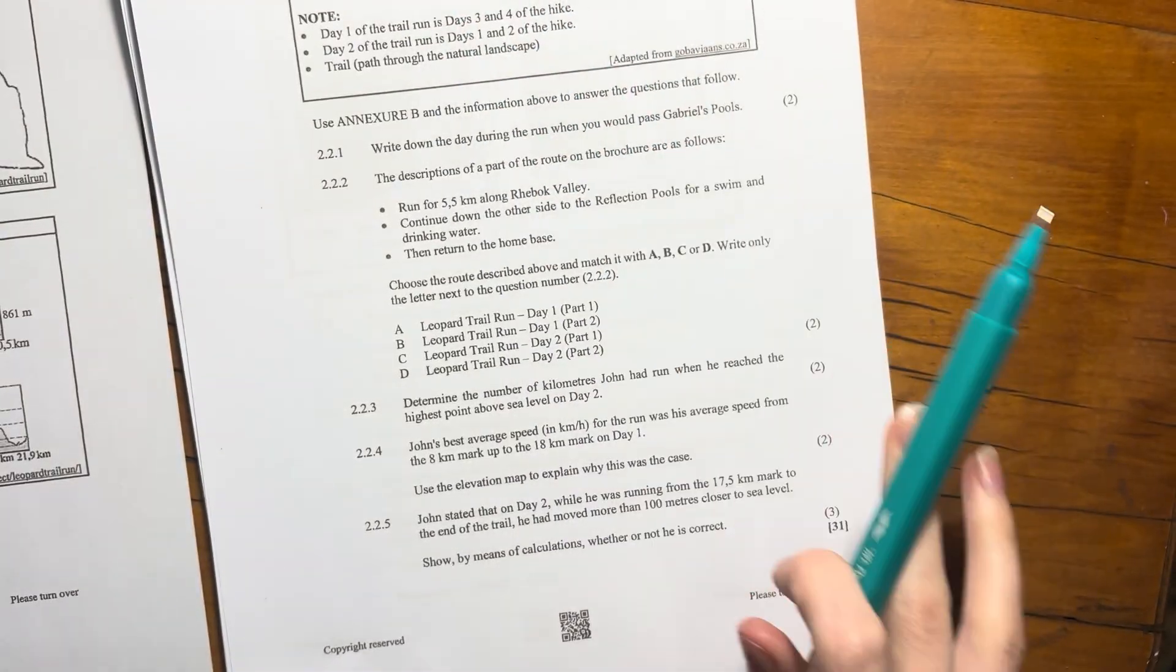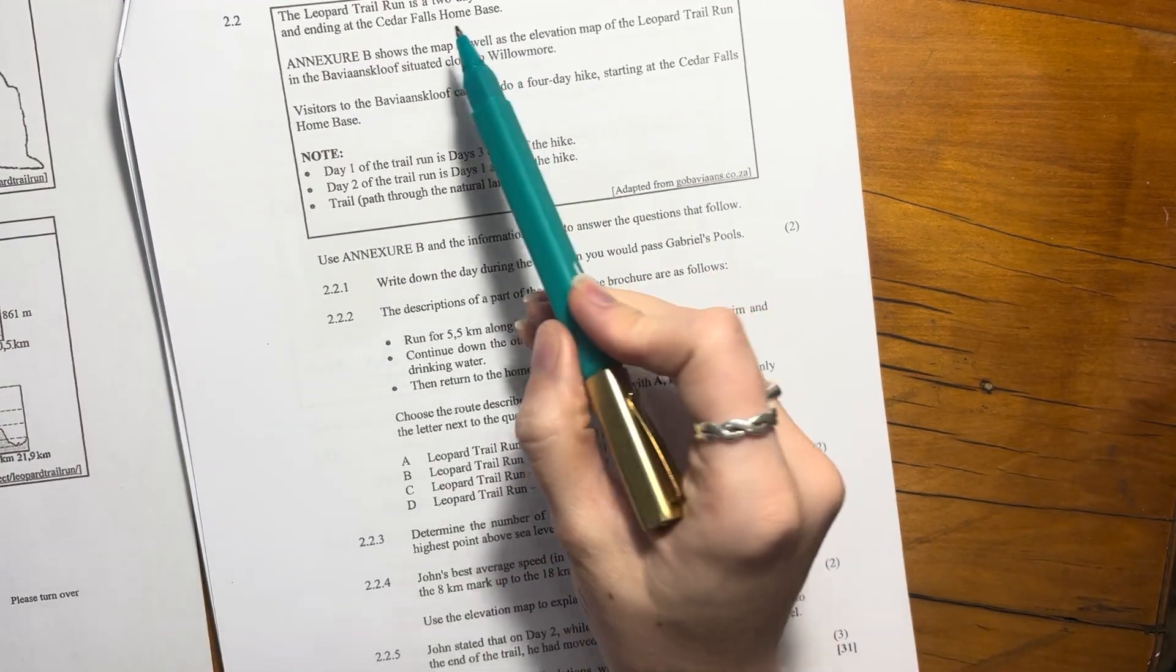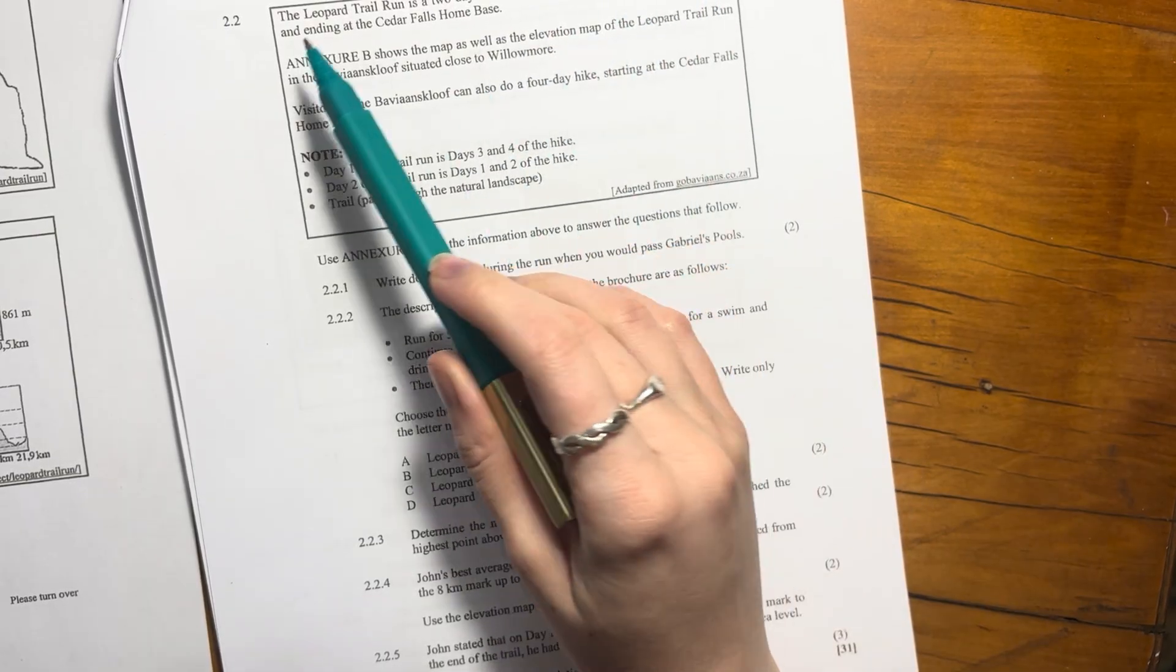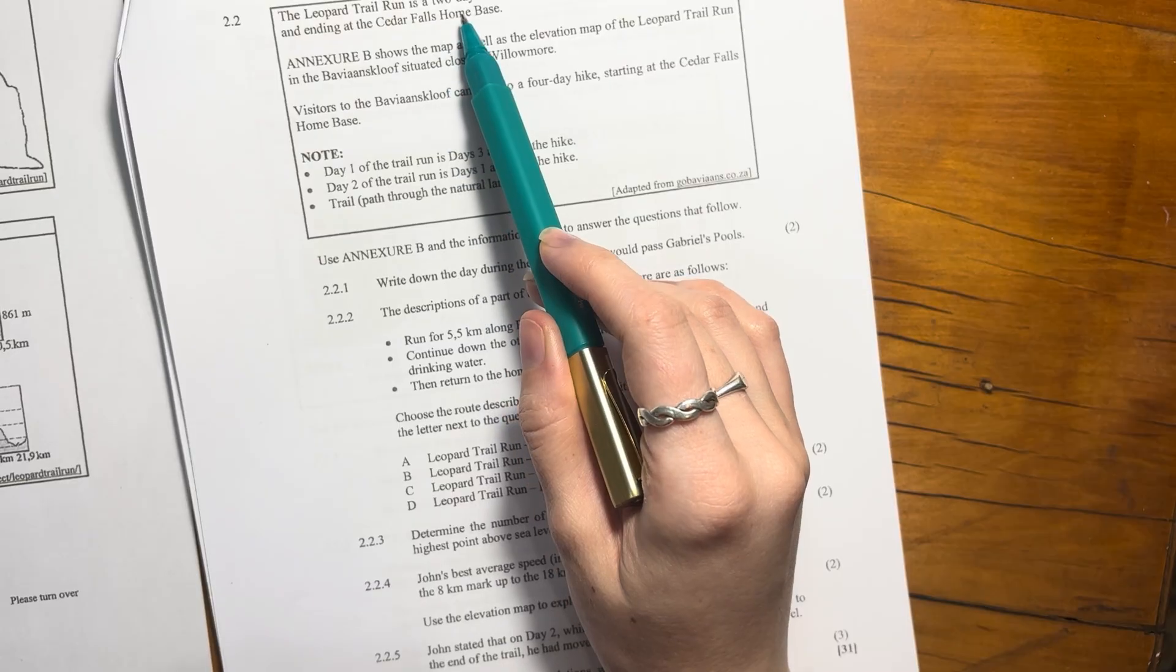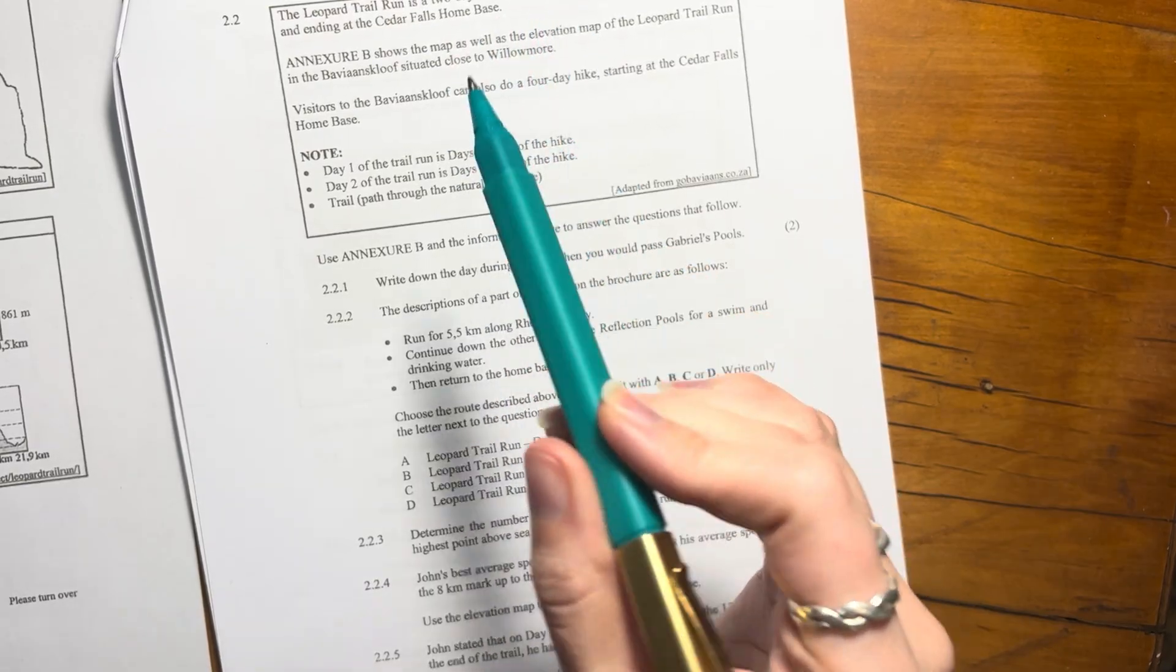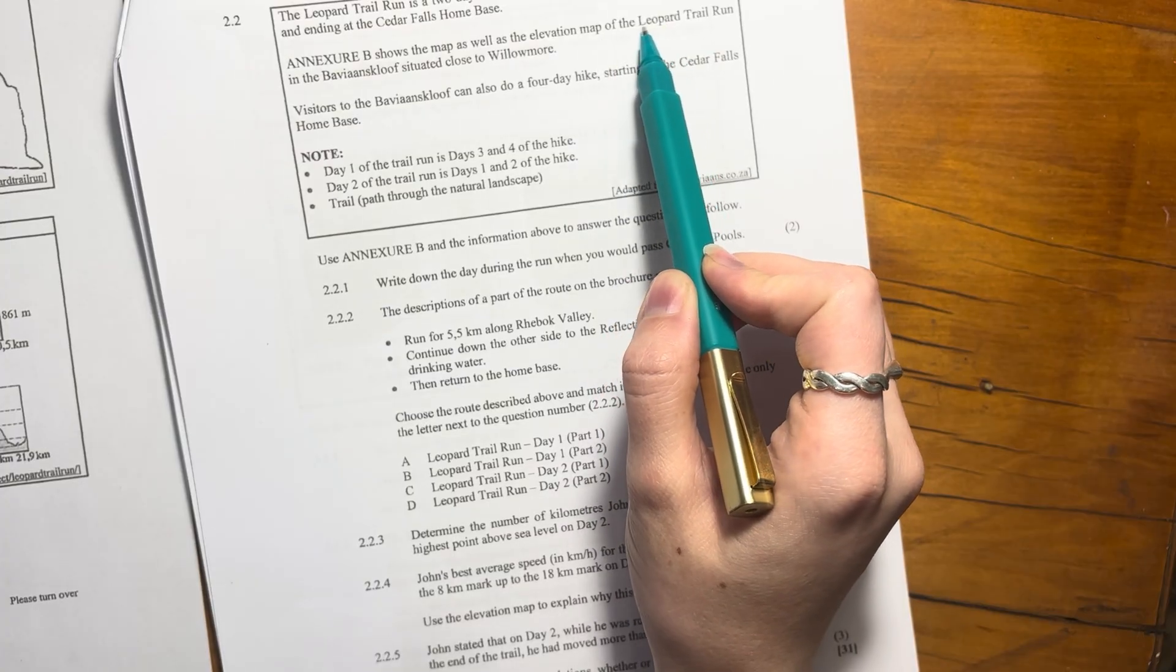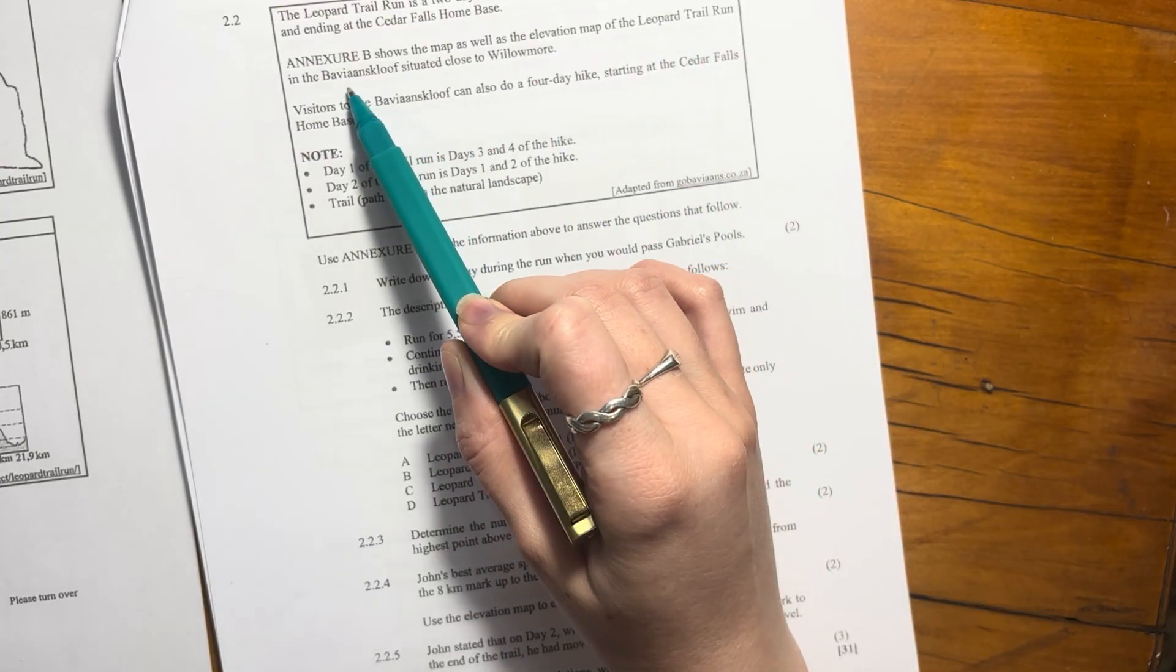Okay, let's finish off question two. It says the leopard trail run is a two-day event run on the outskirts of the camp, starting and ending at the Cedar Falls home base. Annexure B shows the map as well as the elevation map of the leopard trail run in the Baviaanskloof.